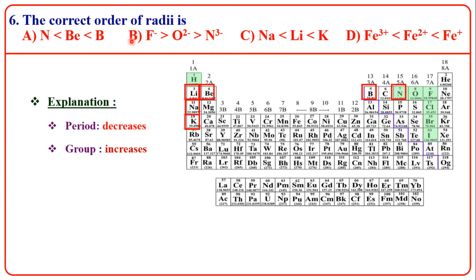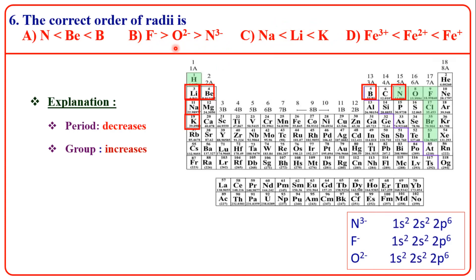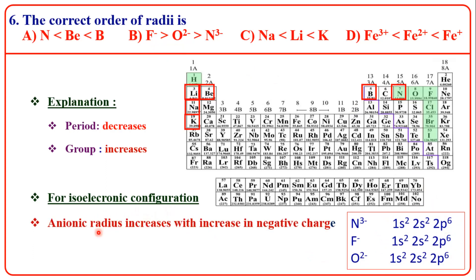For the next part, we are going to look at electronic configuration. The anionic radius increases with the increase in negative charge — as negative charge increases, radius increases.